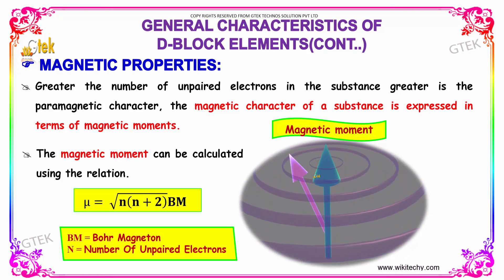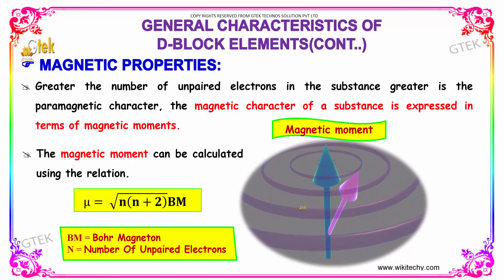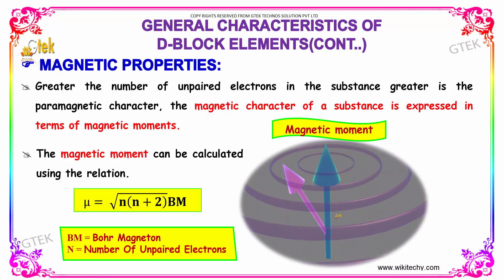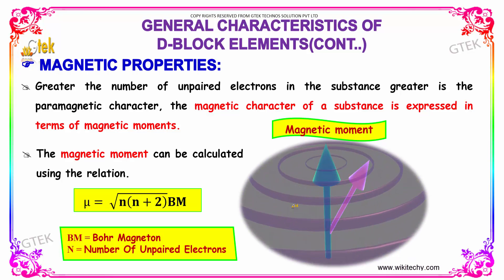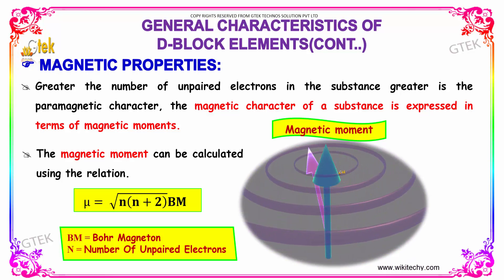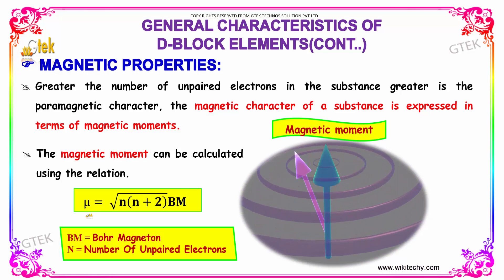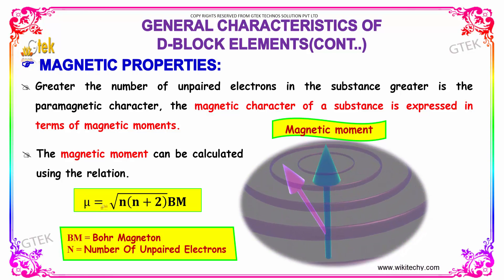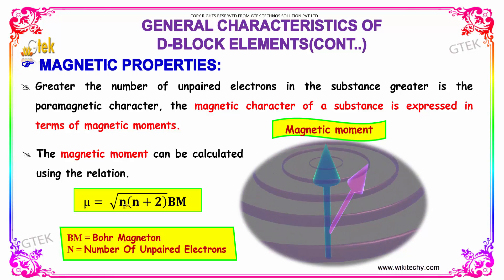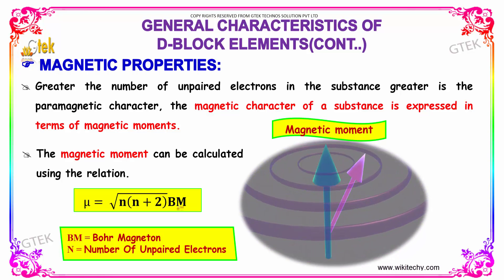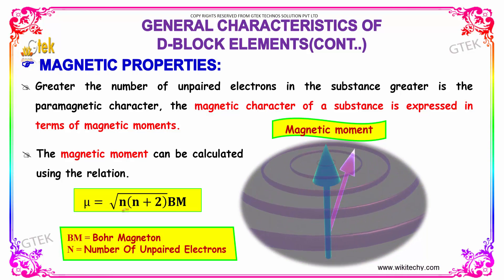The magnetic character of a substance is expressed in terms of magnetic moment. The magnetic moment can be calculated using the relation: mu (μ) equals the square root of n(n+2) Bohr magnetons, where n is the number of unpaired electrons.